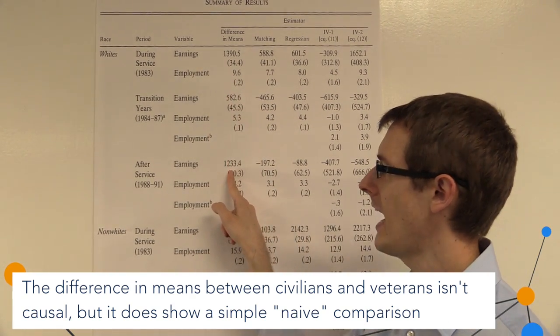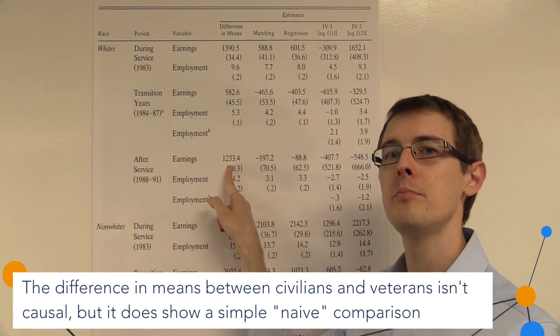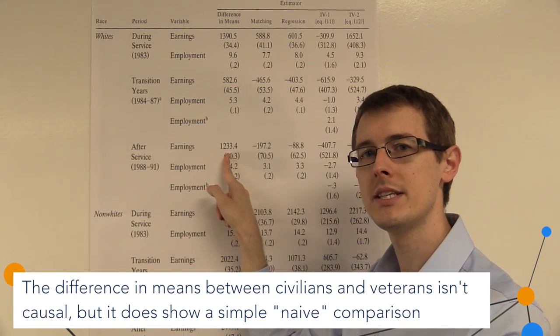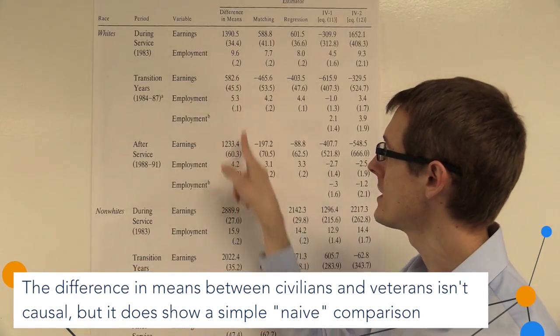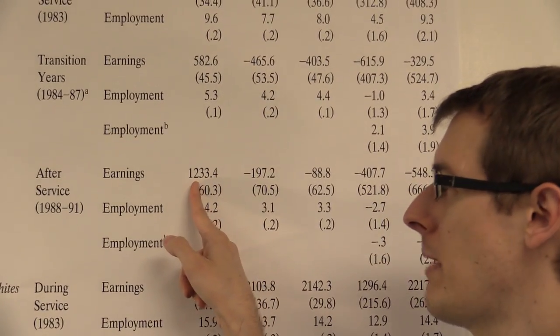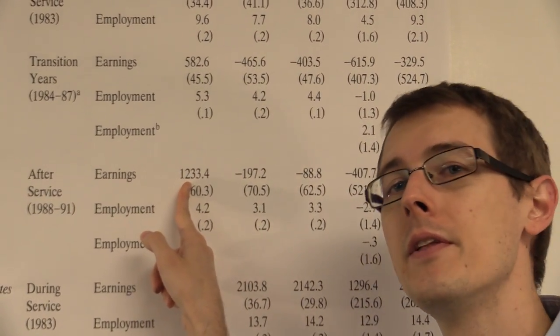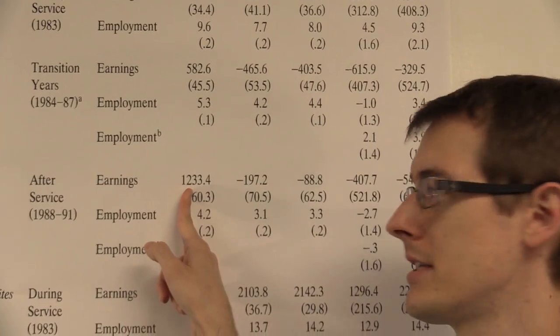So here we see exactly what we saw in the previous graph. People who enlisted in the military make more money. The difference is positive. So after service, they make about $1,200 more than the people who didn't enlist in the military.